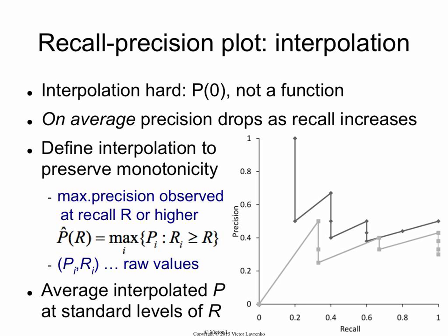What this means is: for every level of recall, the way you estimate precision at that level is you look to the right and find the highest precision observed to the right of that point — and that becomes your precision at this point. For example, at a recall of 20%, even though the actual precision is 50%, you look to the right and the maximum precision you find is two-thirds, right there.